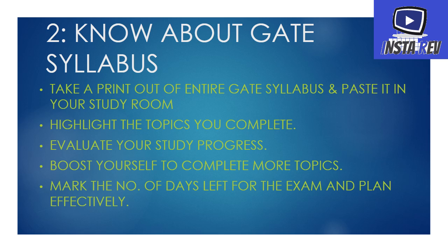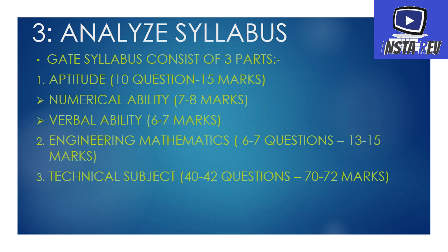Make a calendar and mark all the days left for the exam — in other words, start a countdown. After knowing the exam pattern and syllabus, the third point is to analyze the syllabus. The GATE syllabus consists of three parts: first, aptitude; second, engineering mathematics; and third, technical subjects.